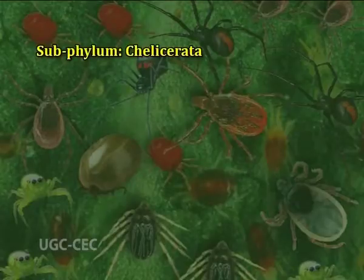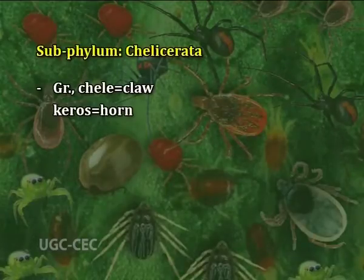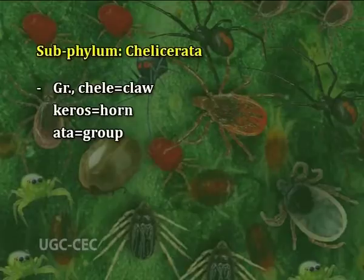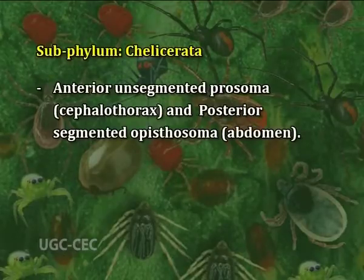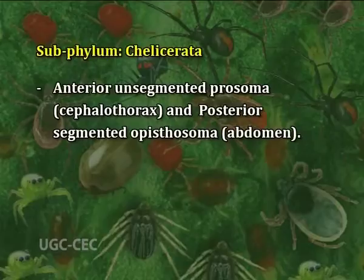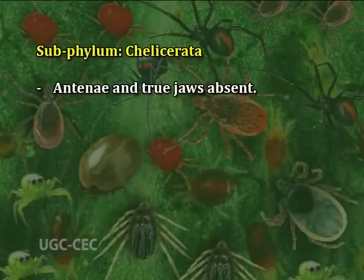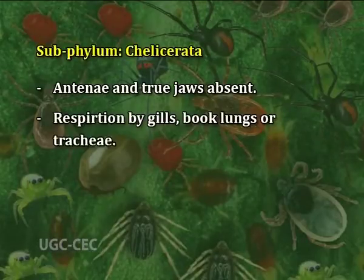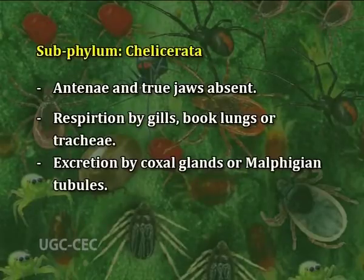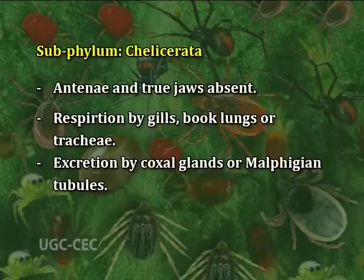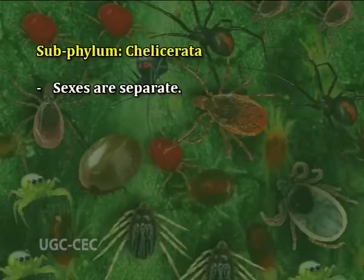Subphylum is Chelicerata. Some characters of this subphylum: here 'chely' is claw, 'keras' is horn and 'eta' is group. Second, body is divided into two parts — an anterior unsegmented prosoma (cephalothorax) and a posterior segmented opisthosoma (abdomen). Third, antennae and true jaws are absent. Four, respiration is by gills, book lungs or trachea. Five, excretion is by coxal glands or malpighian tubes. Six, sexes are separate.